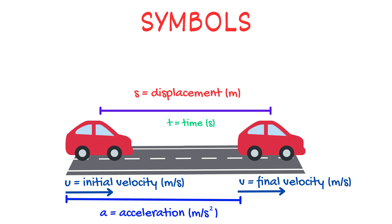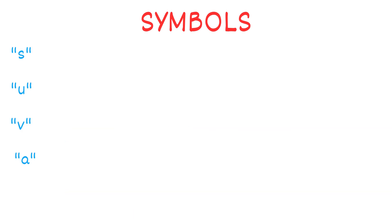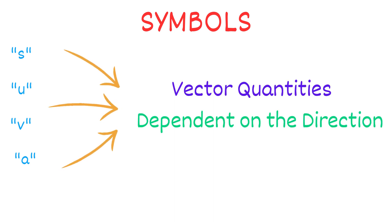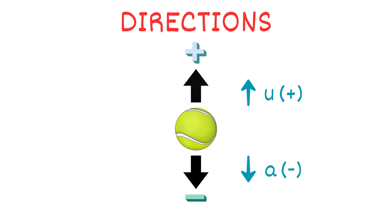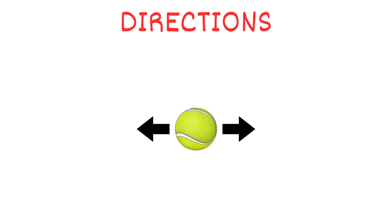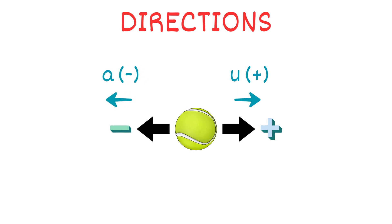While noting the values of these quantities, you need to be careful with the directions. Remember, S, U, V, and A are vector quantities, which means they are dependent on direction. For example, if you have vertical motion and choose the up direction as positive, then down will be negative — so initial velocity upward is positive and acceleration downward becomes negative. Similarly, for horizontal motion, if right is positive, then left is negative.